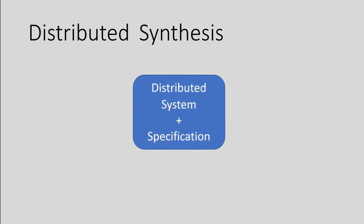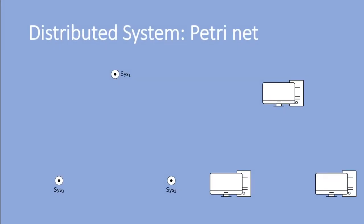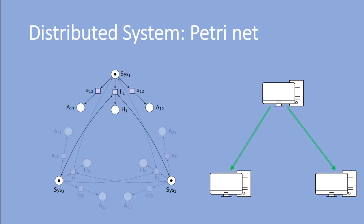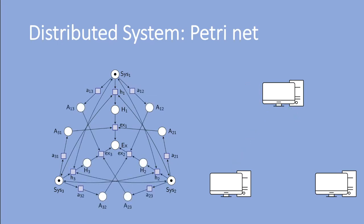We model a distributed system by a Petri Net. For a small example, consider three computers. Each computer can either host a server and thereby inform the other computers about it, or connect itself to another computer. A program can only be executed if the other two computers have connected to the one hosting the server. This is the behavior of the system, and we color these places gray.